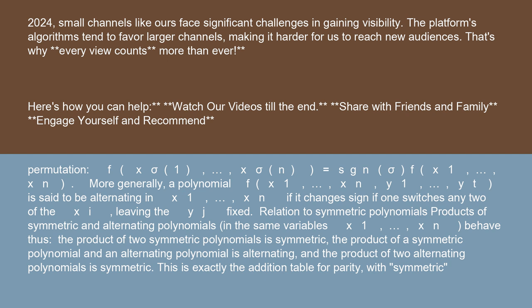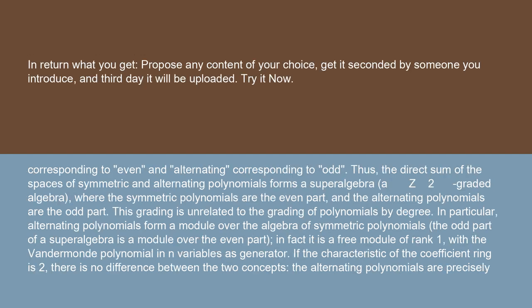This is exactly the addition table for parity, with symmetric corresponding to even and alternating corresponding to odd. Thus, the direct sum of the spaces of symmetric and alternating polynomials forms a superalgebra, a Z2-graded algebra, where the symmetric polynomials are the even part and the alternating polynomials are the odd part.